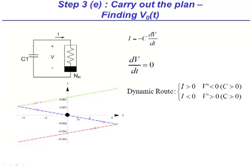Similarly, when I is positive, going back up here, the dynamic route says dV/dt is negative because C is positive. That means I am decreasing on V, and in this region, I am moving towards the left.